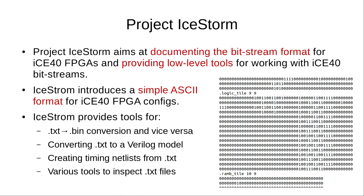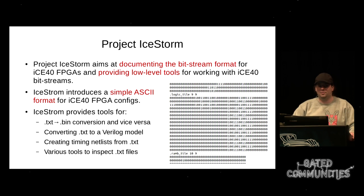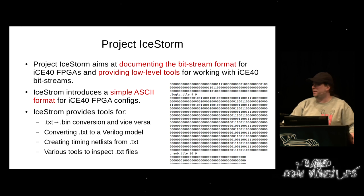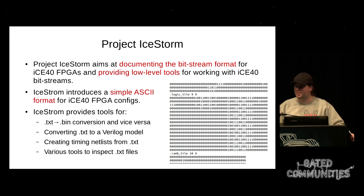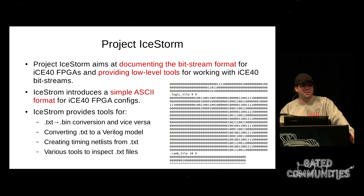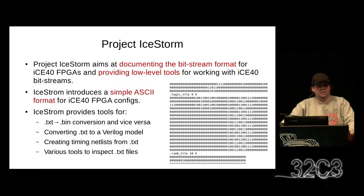With Project IceStorm we had a detailed look at these FPGAs, documented the bitstream format, and wrote low-level tools to work with bitstreams. We also defined a simple text file that can specify each individual bit in the configuration. You see here logic tile 9-9 — those are the coordinates — and then just a block of ones and zeros. When you look up the documentation online, you can decipher that and understand what each bit does. With the IceStorm tools we can convert between text files and binary files, and also do other interesting things like convert a text file back into a behavioral Verilog model.